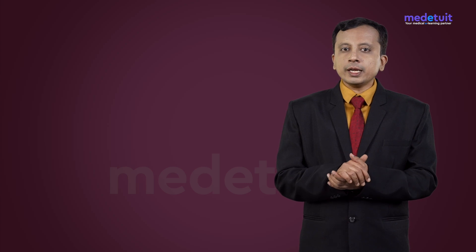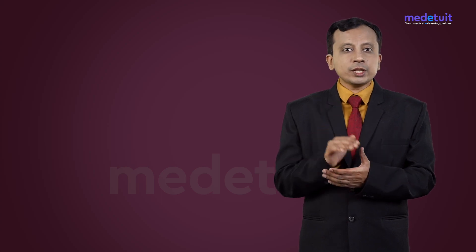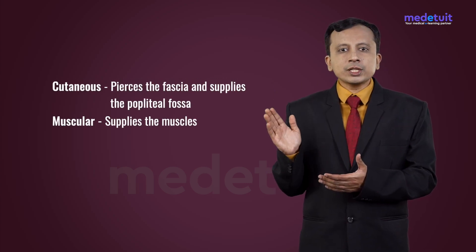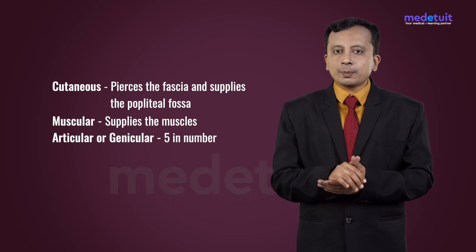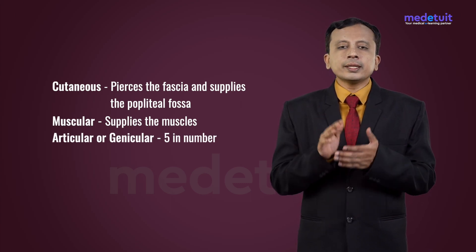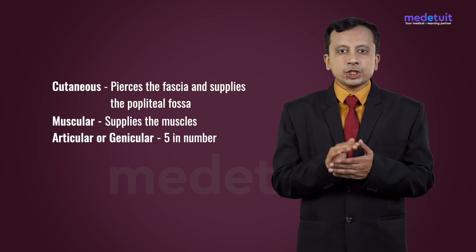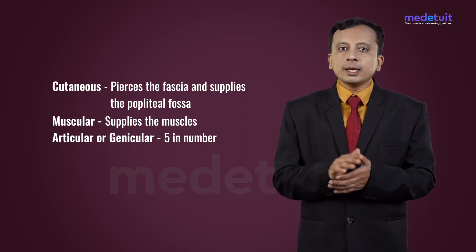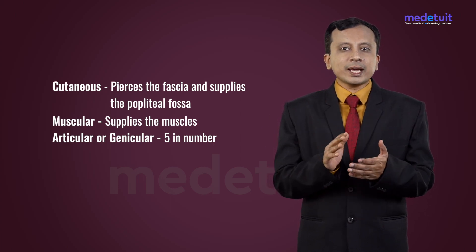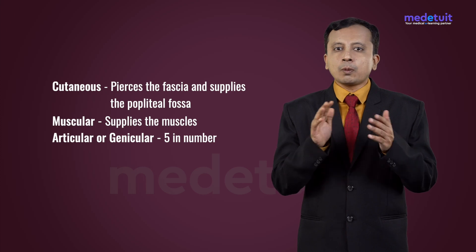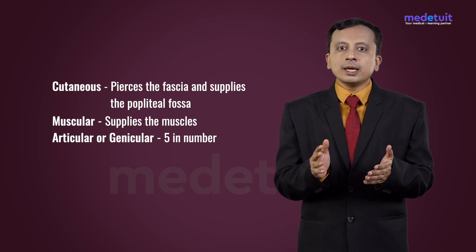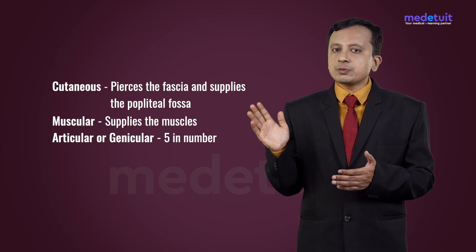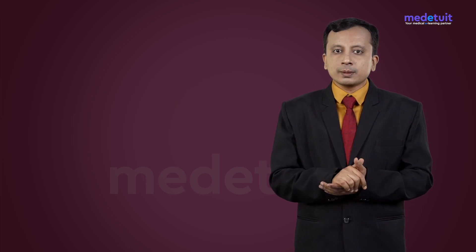The branches of the popliteal artery include three types: cutaneous branches, muscular branches, and articular or genicular branches. The cutaneous branches pierce the fascia and supply the skin over the popliteal fossa. The muscular branches supply the muscles near the popliteal fossa, such as semimembranosus, semitendinosus, biceps femoris, and the gastrocnemius muscle.